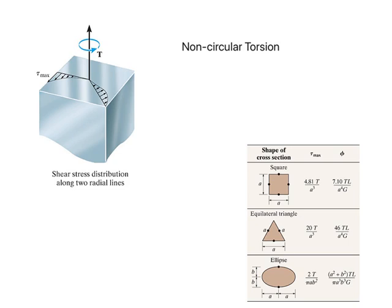There is not much application for non-circular torsion. Most of the application is for twisting of circular sections. And obviously the most important application is power transmission. But if you have a situation where you are trying to twist a non-circular section, in this case, for example, you have a square.